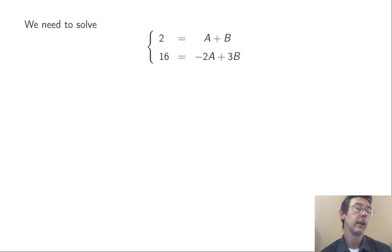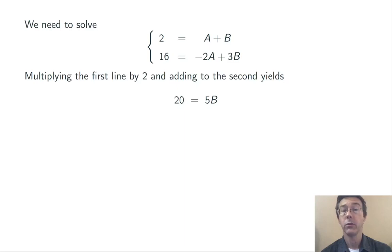Here's that system written in a slightly neater way. Let's go ahead and use the addition method on this. We'll multiply the first line by 2 to get 4 = 2A + 2B, and then add it to the second. We get 20 = 5B, so B is 4.